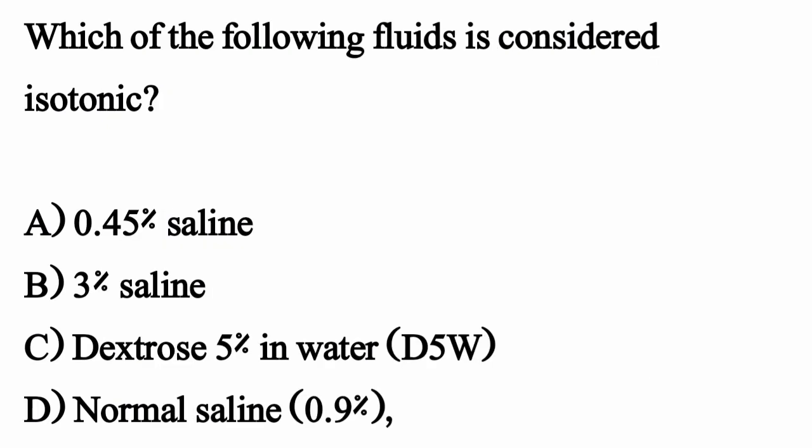Which of the following fluids is considered isotonic? The correct option is option D, Normal Saline 0.9%.